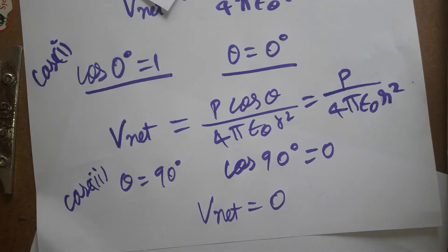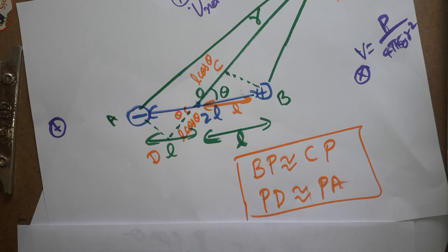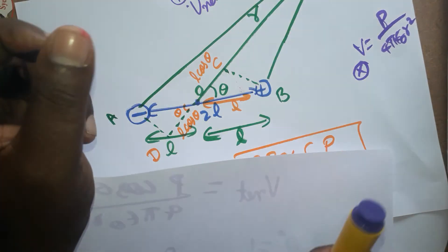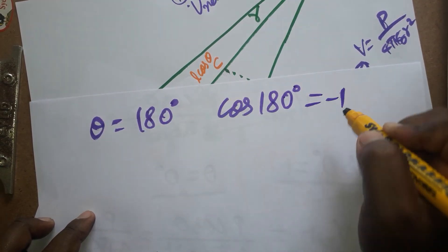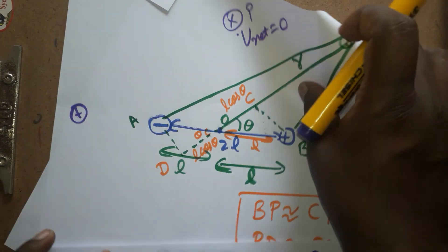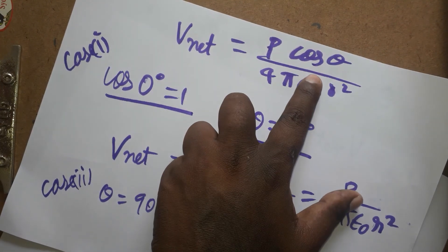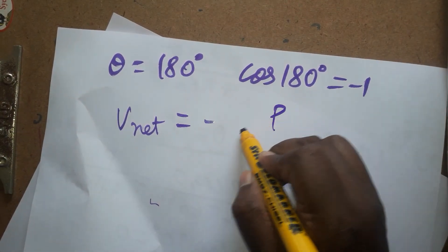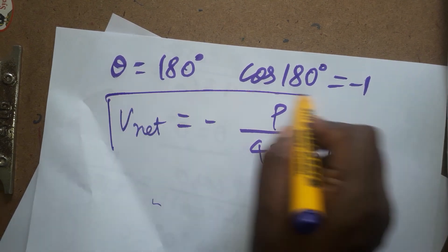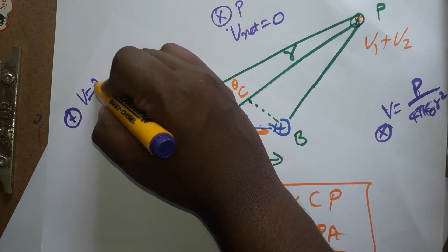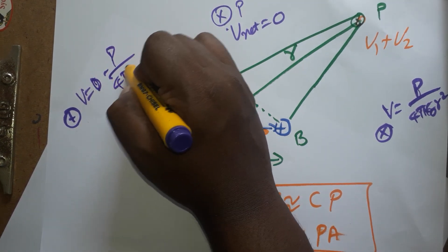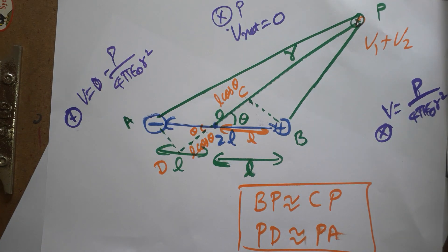When theta = 180 degrees, the point is on the opposite axial side. cos 180 = −1, so V_net = −p / (4πε₀ · r²). In summary, we have three results: axial line V = p/(4πε₀r²), equatorial line V = 0, and the opposite axial side V = −p/(4πε₀r²). Thank you for watching — if you like the channel, please subscribe.